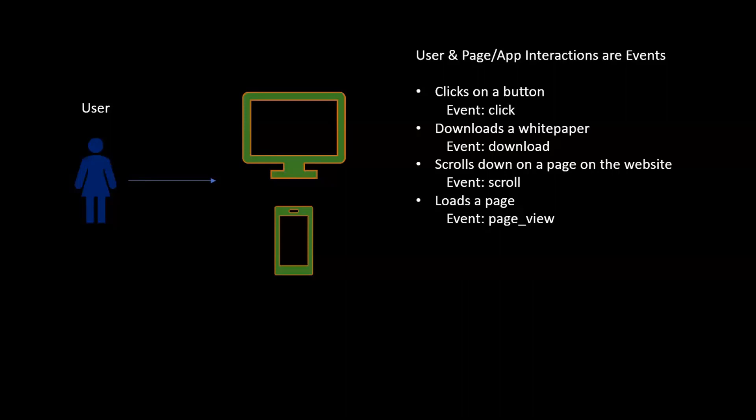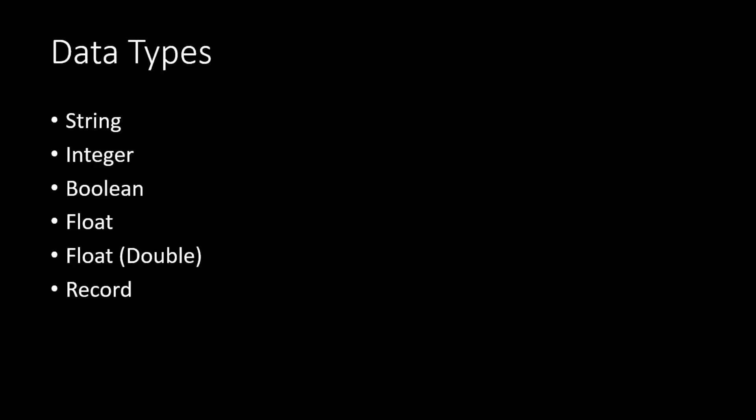When you look in Google Analytics reports, you see aggregated reports — for example, the number of people who clicked a button. But in BigQuery, every user who performed that click is tracked as a separate line item. The data is of various types. The name of an event, like a click event, is a string, which is a character value that gets stored. Integers store numeric values.